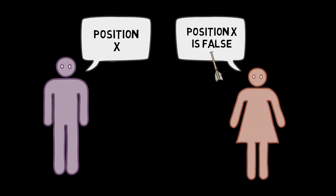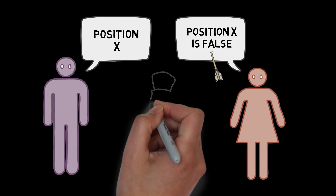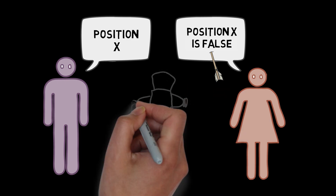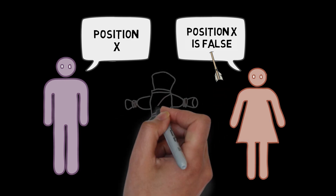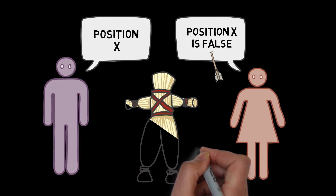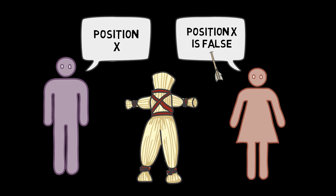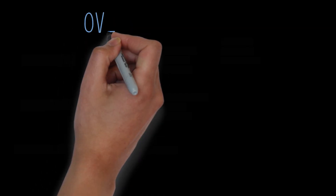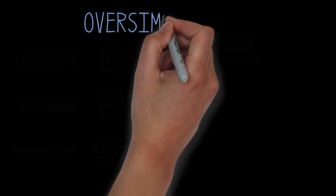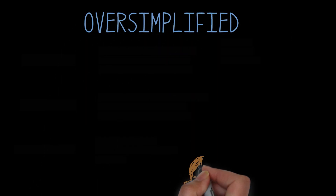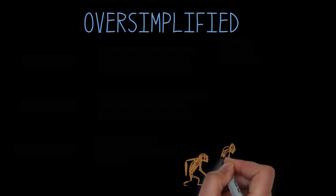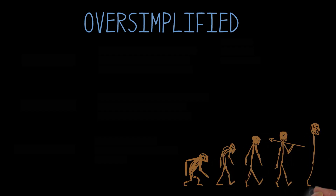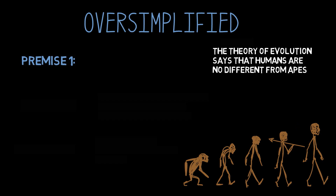In the strawman fallacy we've just considered, the original view was exaggerated to a very extreme view and then attacked. But there are other ways in which a position can be misrepresented as well. Sometimes a position can be oversimplified to the point of being absurd. Here's an example of that. Suppose my friend Gio presents the following argument.